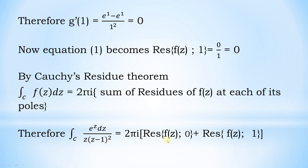Therefore, the integral over C of e^z / [z(z−1)²] dz equals 2πi into (residue of f(z) at 0 plus residue of f(z) at 1), that is 2πi into (1 + 0), which equals 2πi.